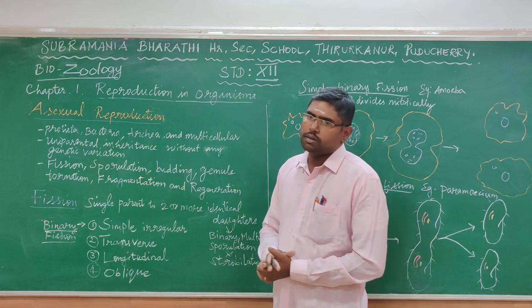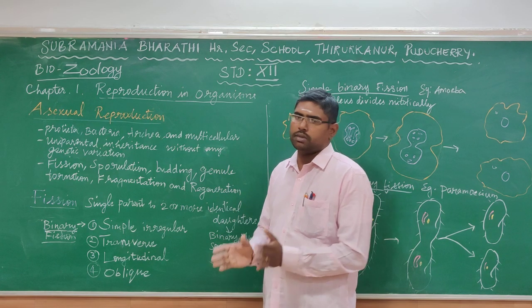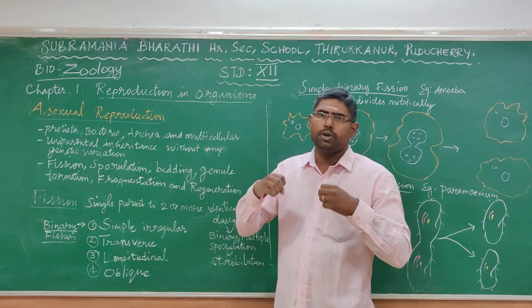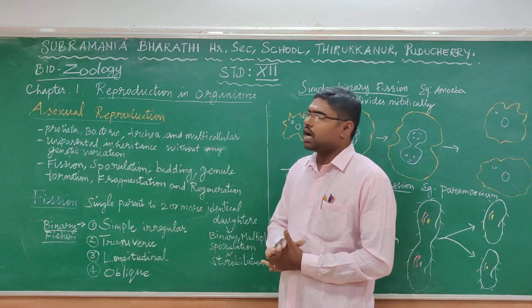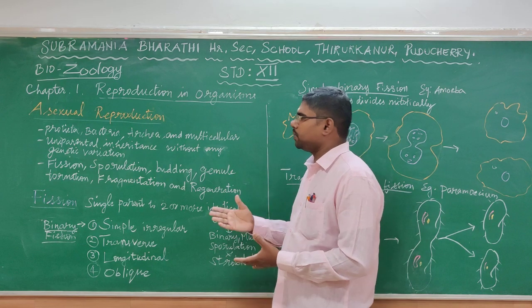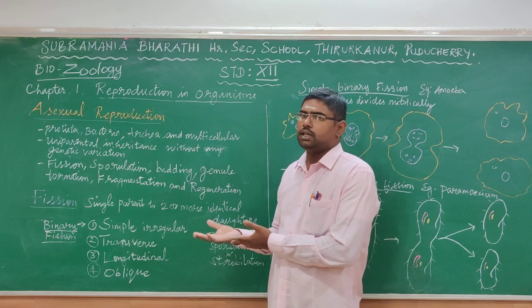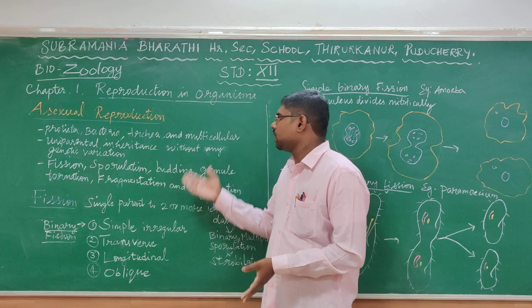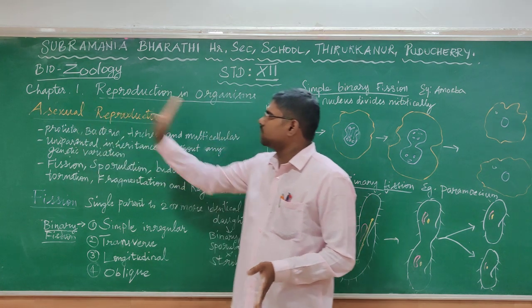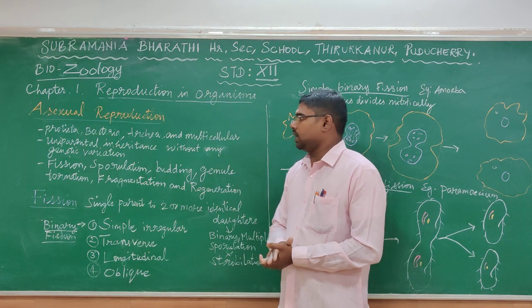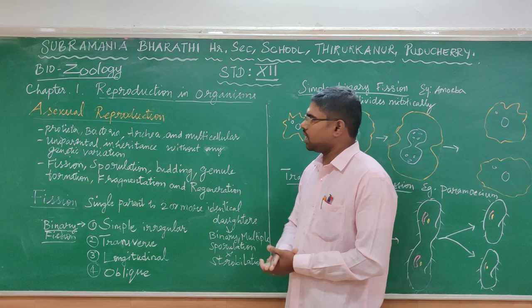And then multicellular organisms — organisms that have numerous numbers of cells. That is called a multicellular organism. For example, sponges, from the largest animals like whale or elephant. In these organisms — Protista, bacteria, Archaea, and multicellular organisms — Asexual Reproduction can occur.